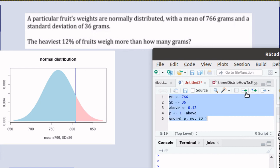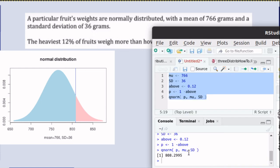So we can run that script and we discover that that number is going to be 808.2995, so a little bit bigger than 800 will make it so that 12% of the population is above that number.